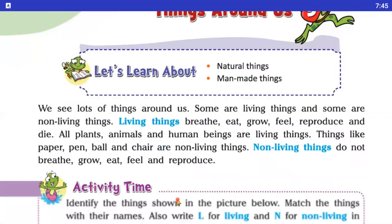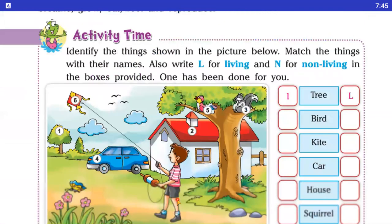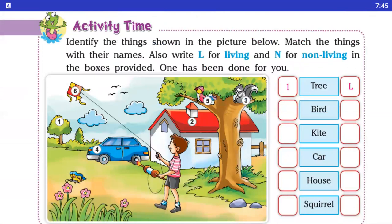Now moving to the activity. As you can see on your screen, it's an activity which is based on living things and non-living things. What we are going to do in this activity? You just write L for living and N for non-living in the boxes provided, and one has been done for you.